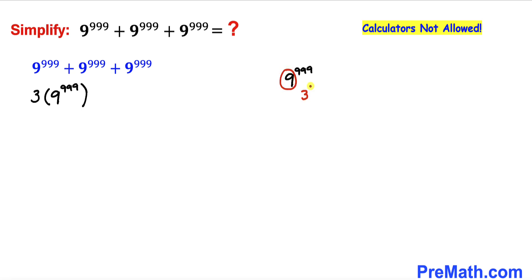9 could be written as 3^2. Therefore we can write this expression as 3^2 and then whole power 999.